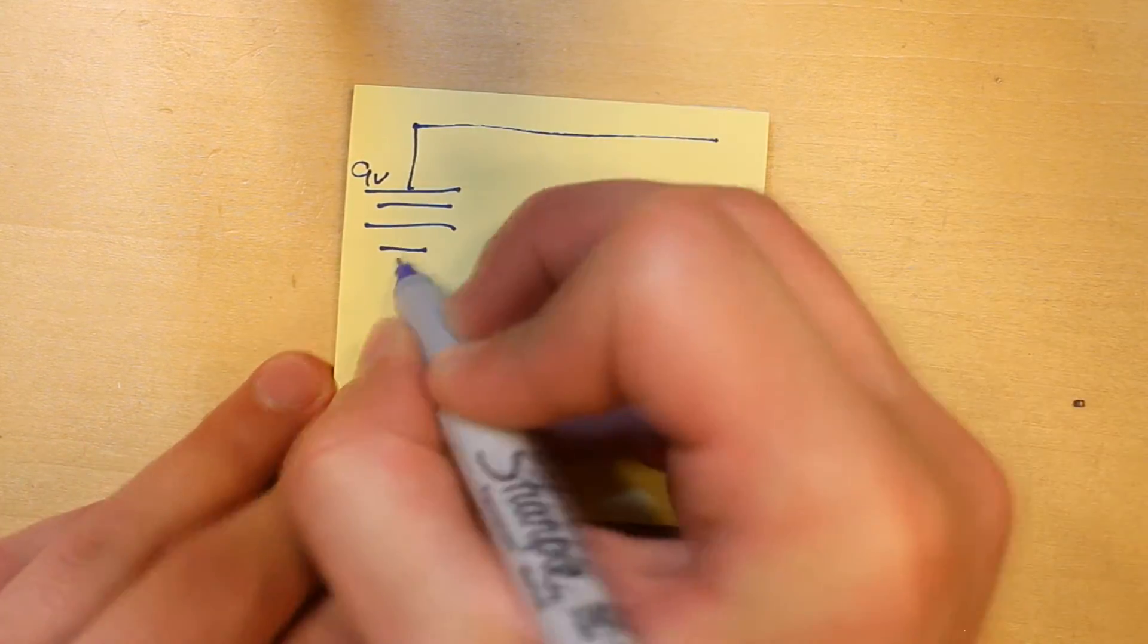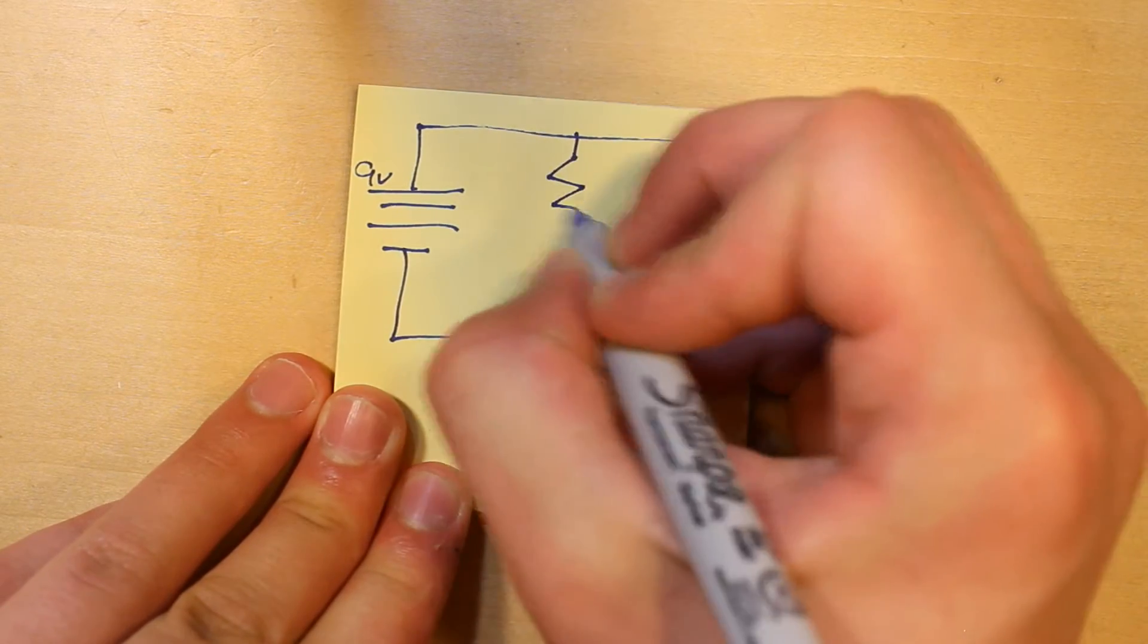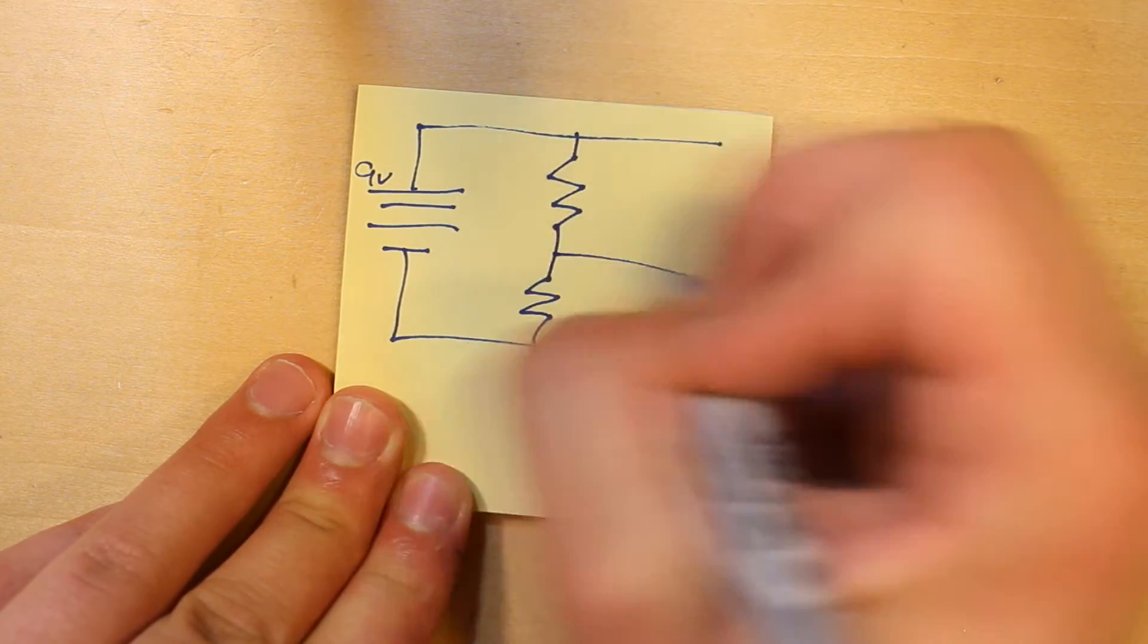So we have the battery, let's call it 9 volts, a positive line, a negative line, two resistors in series, and a middle rail.